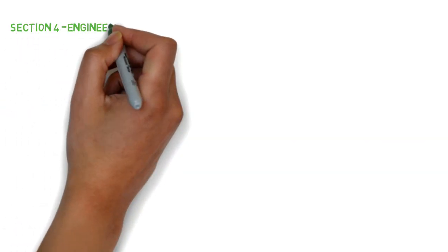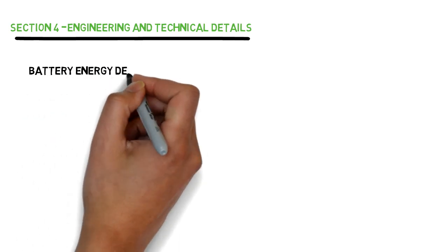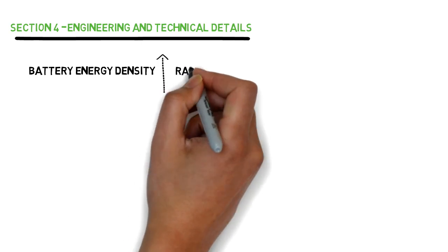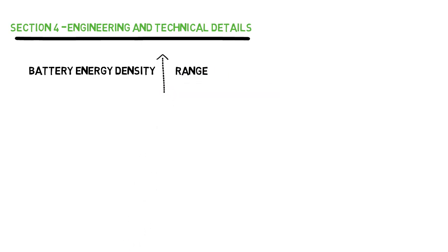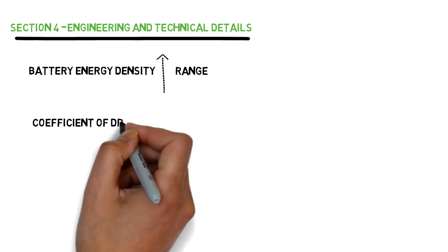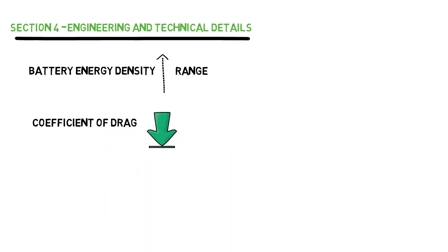Section 4: Engineering and Technical Details. The range of an electric car is heavily tied to the battery energy density. Lithium-ion technology has allowed electric cars to have a range greater than 200 miles, shattering the range anxiety that had kept the technology down. Most electric cars also have a low coefficient of drag which makes them go the extra miles. The Tesla Model S, for example, has a coefficient of drag of 0.24.